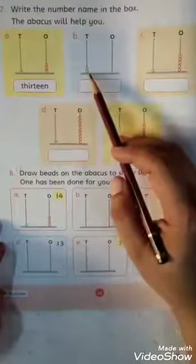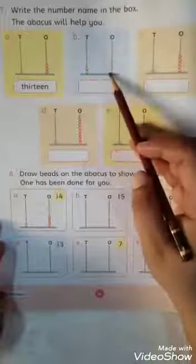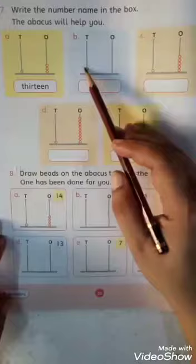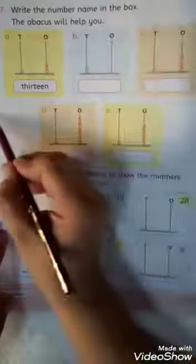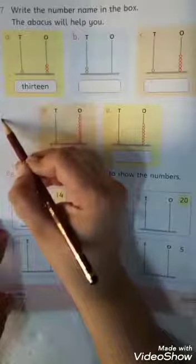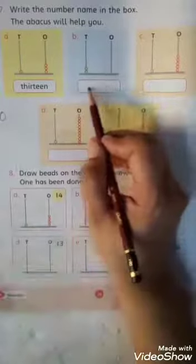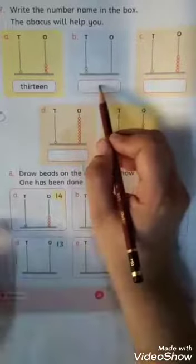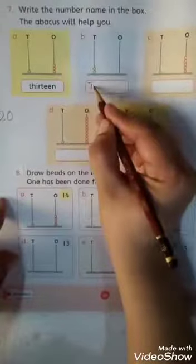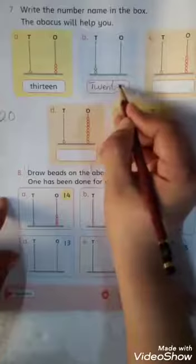First of all, you will make your number. At tens, you have two, and at ones, you have no digits — means zero. When you write two at your left-hand side and zero at your right-hand side, it makes twenty. So here in your column, you will write the number name which is twenty — T-W-E-N-T-Y.